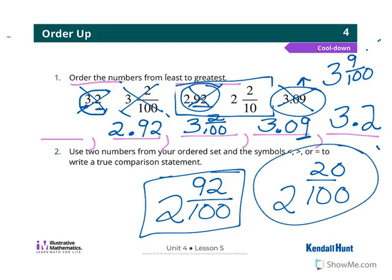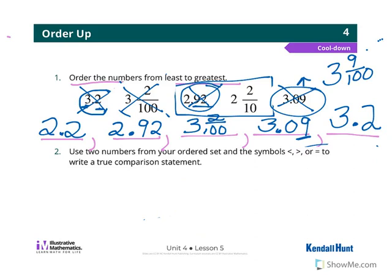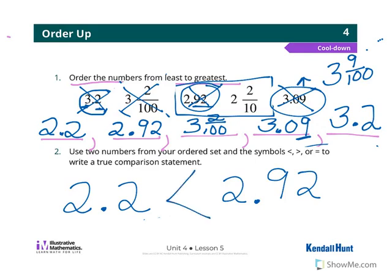Which leaves us with our smallest, which is 2 and 2 tenths. Alright, for number 2 you just had to pick any of the numbers and write a true comparison statement. So for example, if I have 2 and 2 tenths that I'm comparing to 2 and 92 hundredths...